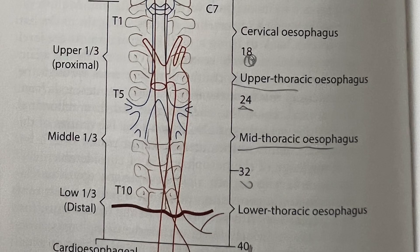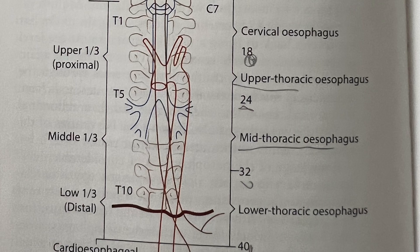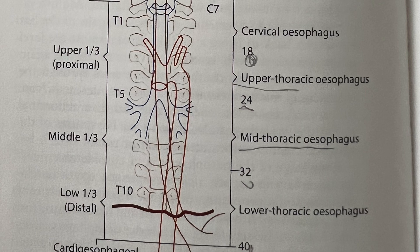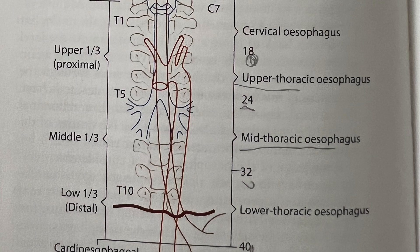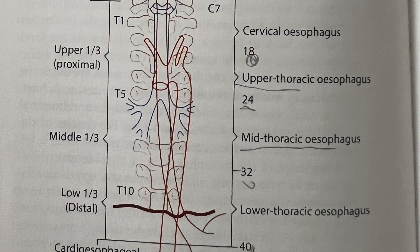Anatomical Constrictions of the Esophagus. The first constriction is the narrowest part of the esophagus at the cricopharyngeal sphincter. It is the commencement of the esophagus and point of termination of the pharynx, generally at approximately 15 cm from the incisor teeth.